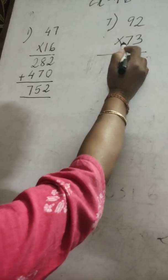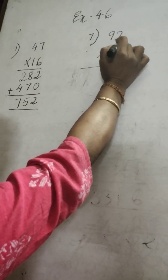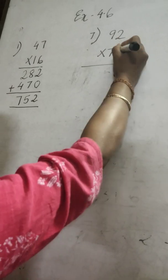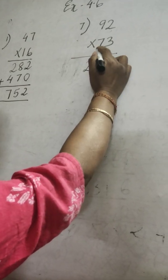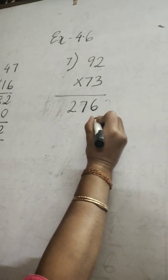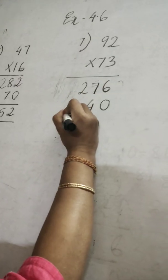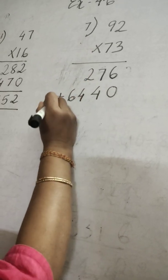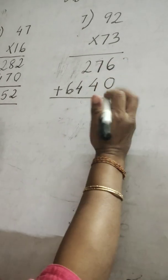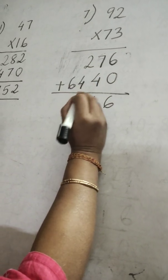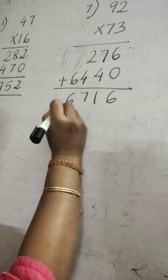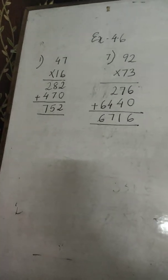Same way for the next example. First multiply 3 with the two-digit number: 3 twos are 6, 3 nines are 27. To multiply with the second digit, leave the first place — put a cross or 0. Now multiply 7 with the two-digit: 7 twos are 14, carry 1. 7 nines are 63 plus 1 is 64. Now add: 6 plus 0 is 6, 7 plus 4 is 11 carry 1, 4 plus 2 is 6 plus 1 is 7. The answer is 6716.